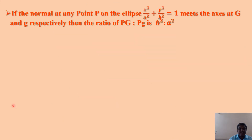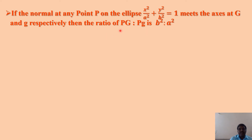The first property: if the normal at any point P on the ellipse x²/a² + y²/b² = 1 meets the axes at G and g respectively — that is, the x-axis at capital G and y-axis at small g — then we have to show that the ratio PG to Pg is b² to a².